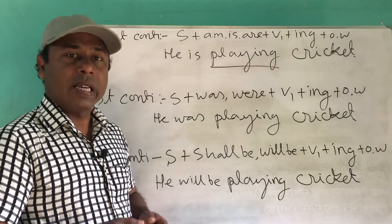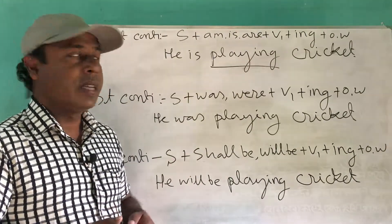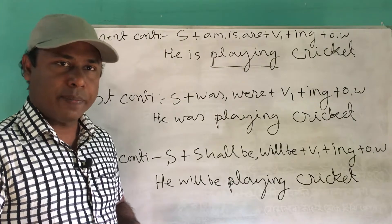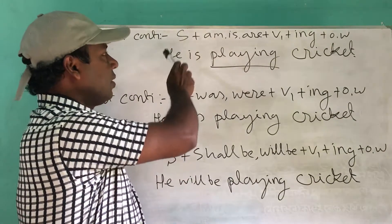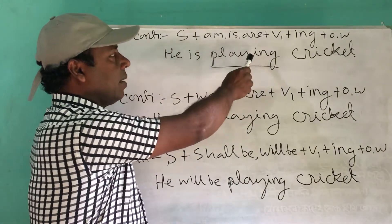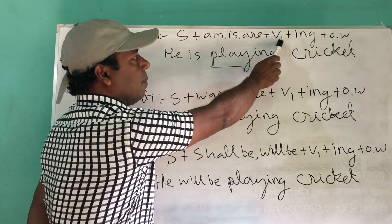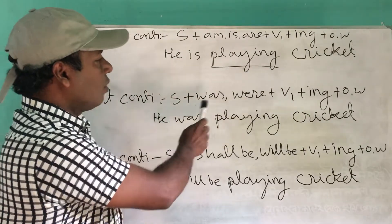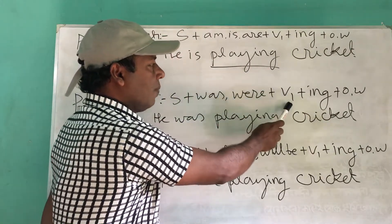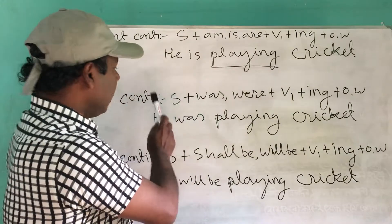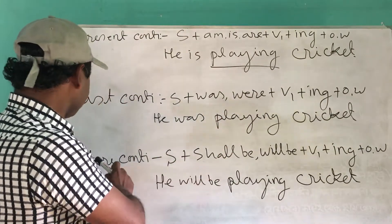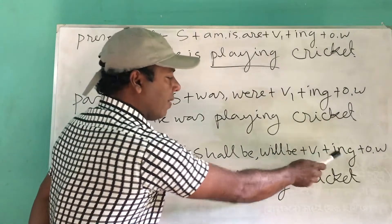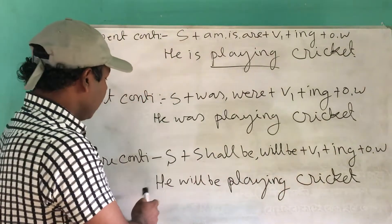Hi viewers, Assalamu Alaikum. Today I will present continuous, past continuous, and future continuous tense. Present continuous: subject + am/is/are + present participle. For example, 'He is playing cricket.' Past continuous: subject + was/were + present participle. For example, 'He was playing cricket.' Future continuous: subject + shall be/will be + present participle.